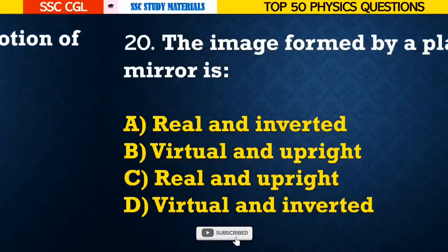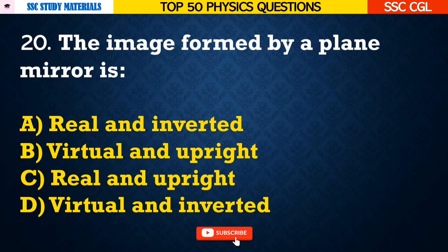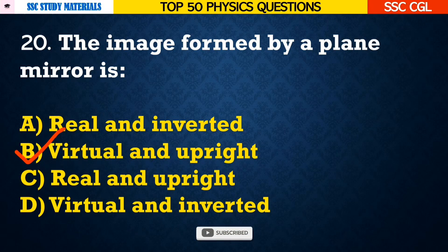Question number 20: The image formed by a plane mirror is — Answer B. Virtual and upright.